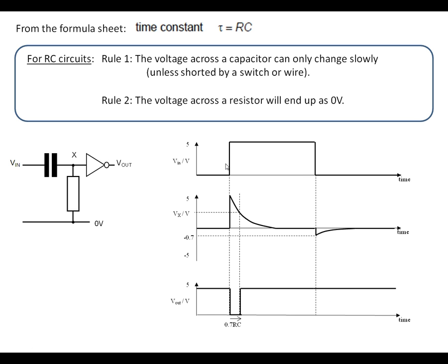So a rising spike coming in here or rising pulse creates a short pulse going down to 0.7 volts of 0.7 RC seconds.